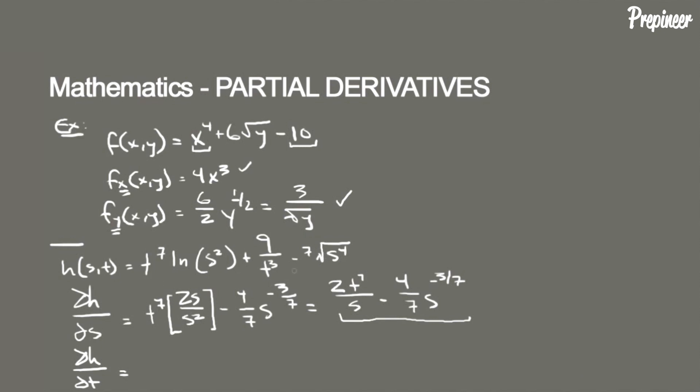So we're just concerned with finding the derivative of these two functions right here, and that ends up being 7t to the 6 natural log of s squared minus 27t to the negative 4. So that's once again what looks like a harder function to find partial derivatives for, but it's the same routine.